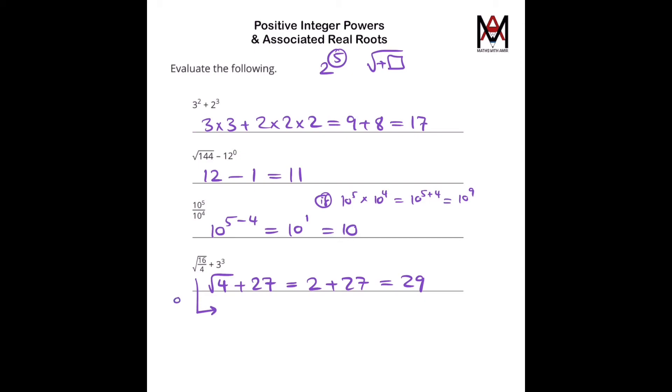We could, however, separate the square root, because this is square root of 16 over 4. We could have done square root of 16 over the square root of 4, plus 27.